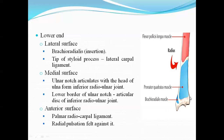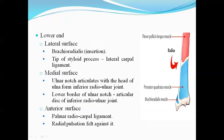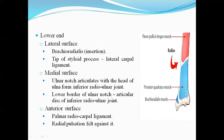The medial surface has the ulnar notch, which articulates with the head of the ulna to form the inferior radioulnar joint. The inferior margin of the ulnar notch gives attachment to the articular disc of the inferior radioulnar joint. The anterior surface of the lower end gives attachment to the radiocarpal ligament.